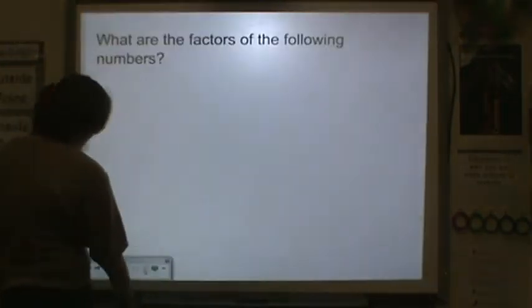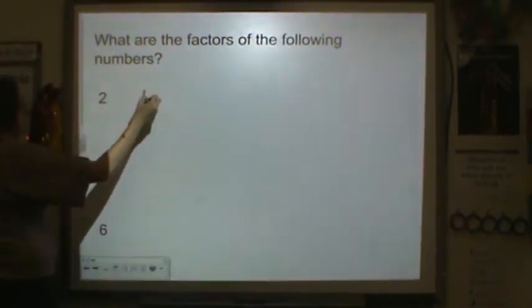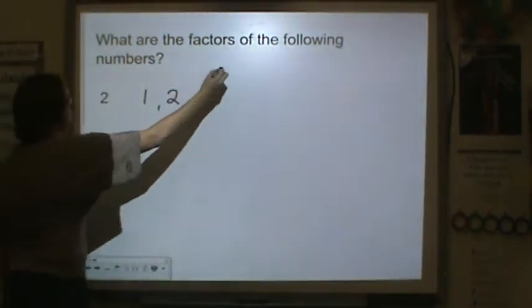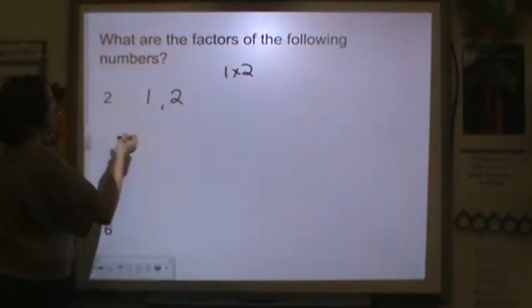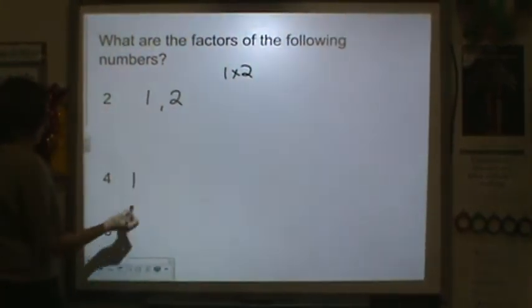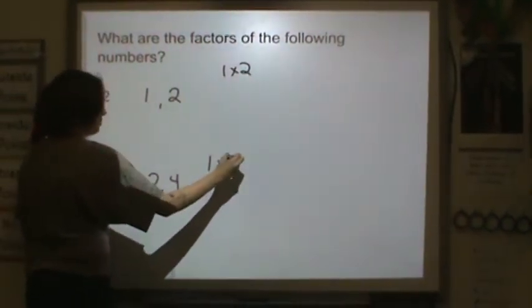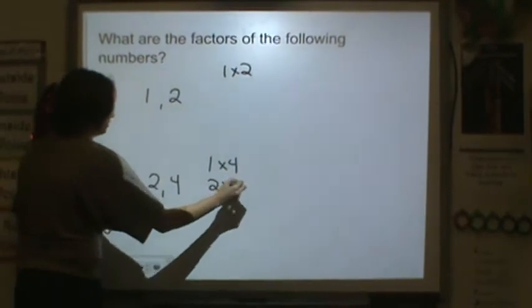So let's do the factors of these numbers. Numbers I can multiply to get to 2. Well, 1 and 2 because 1 times 2 is 2. There are no other factors. Factors to get to 4. I have 1, 2, and 4. I've got 1 times 4 and 2 times 2.